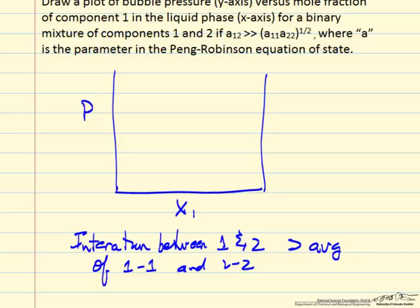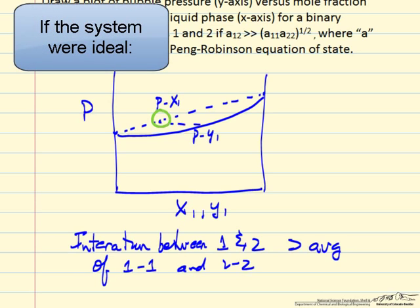For an ideal system, we can look at both of these to visualize what happens. The pressure versus x1 follows Raoult's law—that's a straight line. This is pressure versus x1, pressure versus y1, and this point here is an equilibrium point. That's an ideal system.